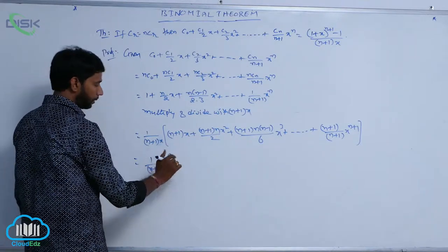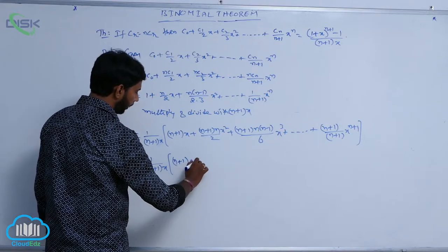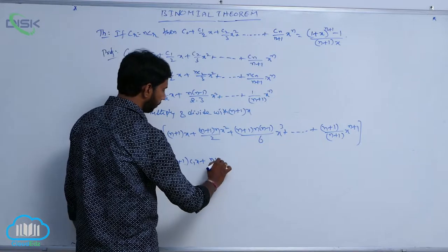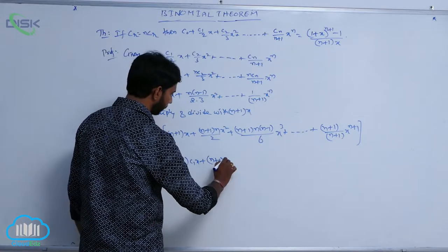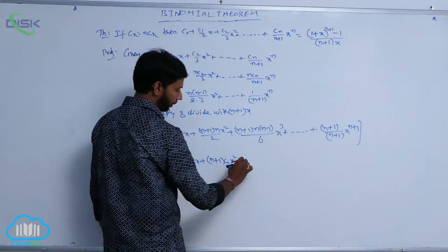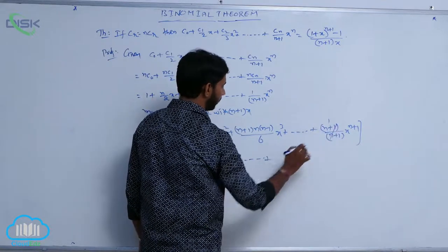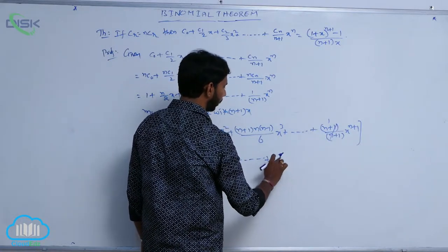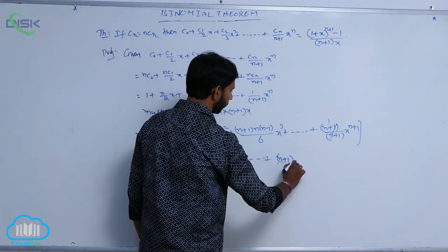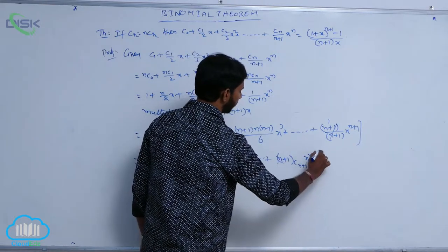Here, (n+1) can be written as (n+1)C₁·x. And (n+1)·n/2 is represented as (n+1)C₂, so we get (n+1)C₂·x² + ... and 1 can be written as (n+1)C_{n+1}·x^{n+1}.